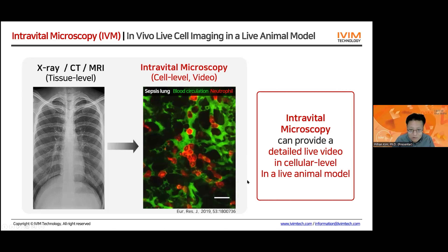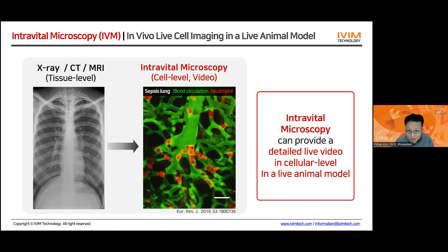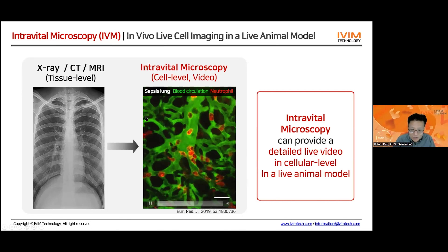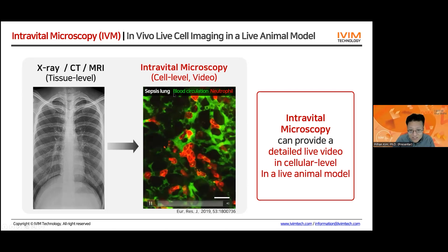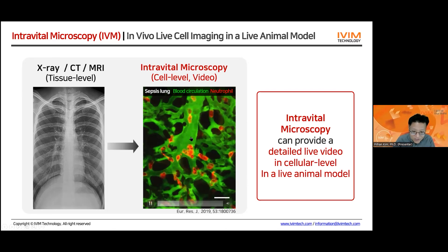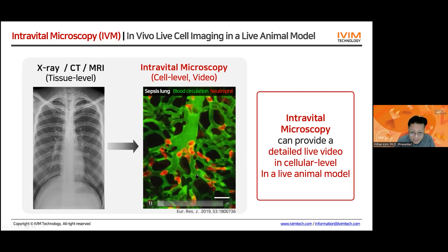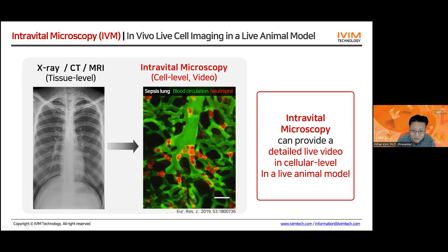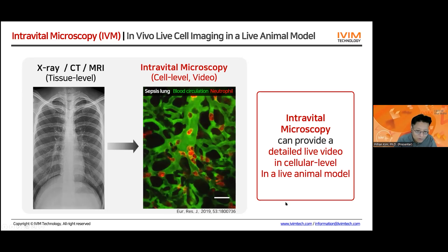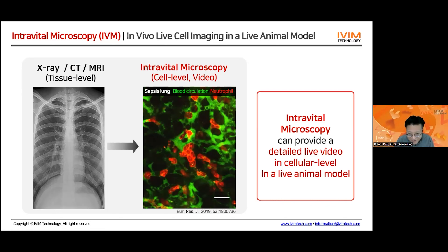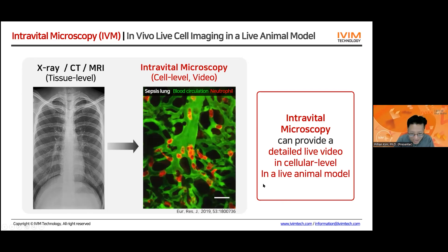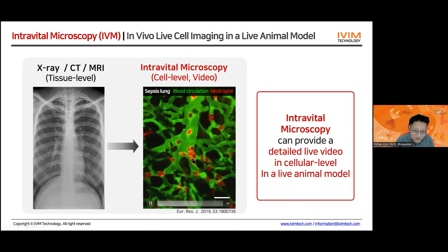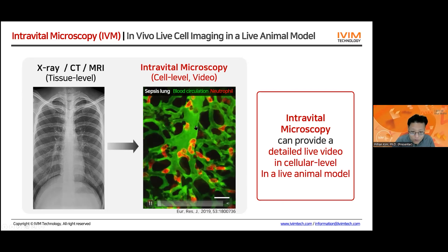The example in the middle is a 10-minute video obtained from the lung of a sepsis mouse model. The green color represents the blood — you are looking at the capillaries and arterioles in the lung. The red color is neutrophil, labeled by injecting antibodies conjugated with a fluorophore that specifically labels neutrophils inside the blood vessel.